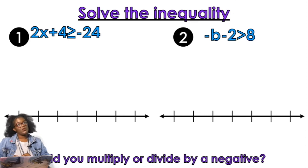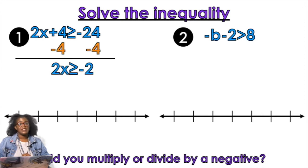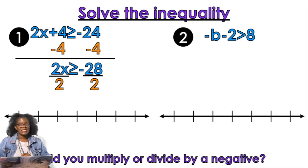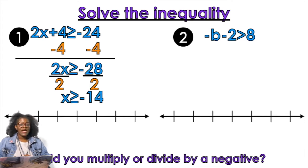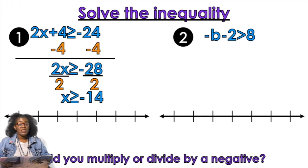Okay, so our first two-step inequality: 2x + 4 ≥ -24. We're going to subtract 4 from both sides, giving us 2x ≥ -28. Then we divide by 2 on both sides and get x ≥ -14. Did I multiply or divide by a negative on both sides? No — there was only a negative on one side, so I'm not going to flip my symbol.